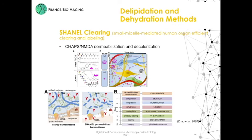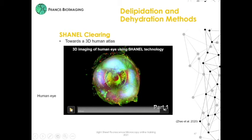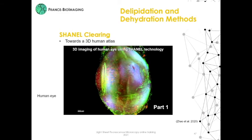The last method developed by Zhao and collaborators is the Chanel method. It's a new tissue permeabilization method to clear and deeply label whole mammalian organs, based on a new detergent called SHANEL. This detergent forms smaller micelles, allowing full permeabilization of even human organs. This protocol also uses NMDA and methylglycine for decolorization. Here we have an example of a human eye cleared with this method, and you can appreciate the fine details.